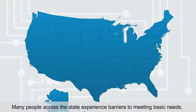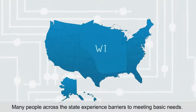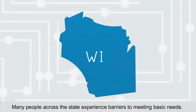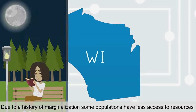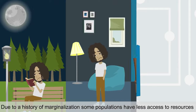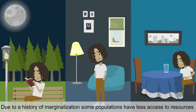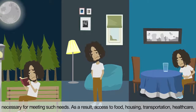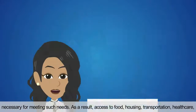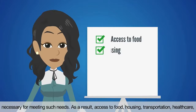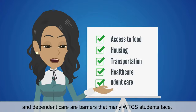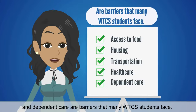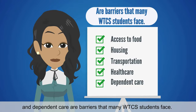Many people across the state experience barriers to meeting basic needs. Due to a history of marginalization, some populations have less access to resources necessary for meeting such needs. As a result, access to food, housing, transportation, health care, and dependent care are barriers that many WTCS students face.